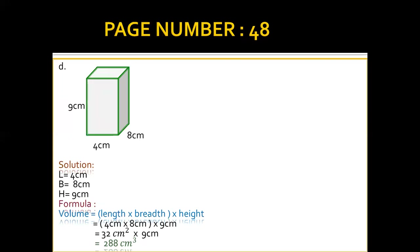The last part, D: length is 4 cm, height is 9 cm, and breadth is 8 cm. We apply the formula: length × breadth × height. For convenience I am repeating the formula each time so you can learn it easily. Length 4 × breadth 8 = 32, then 32 × 9 = 288 cm³ is the volume of the cuboid.